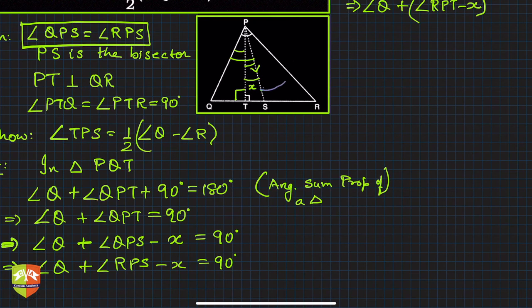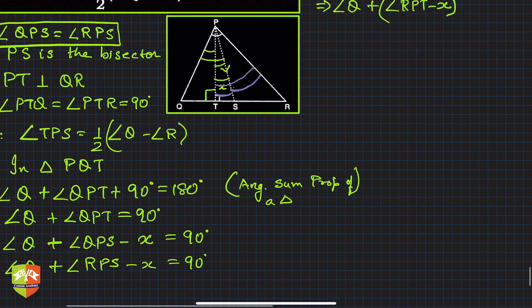This is ∠RPS. You can check, this is ∠RPS, this angle. So let me draw with this color: ∠RPS, this is ∠RPS, is equal to the full angle, which is this one, minus this x. I hope you got it, right?